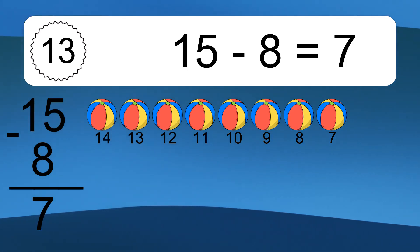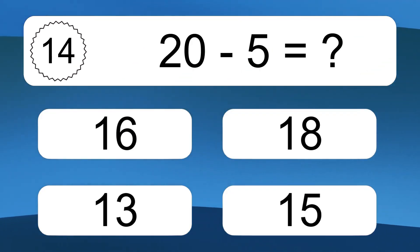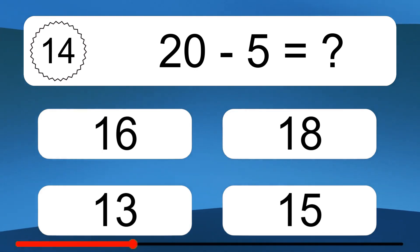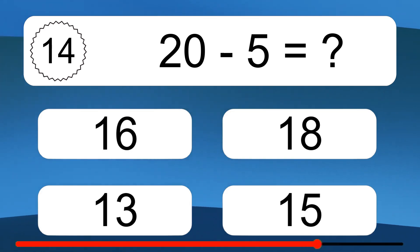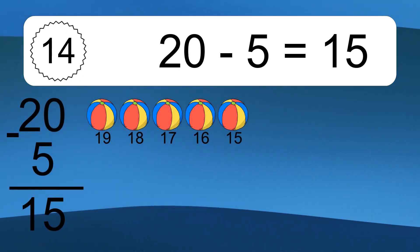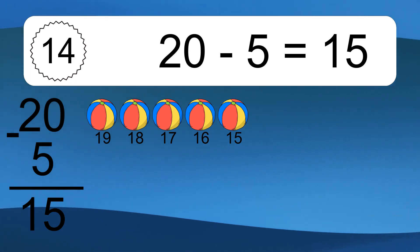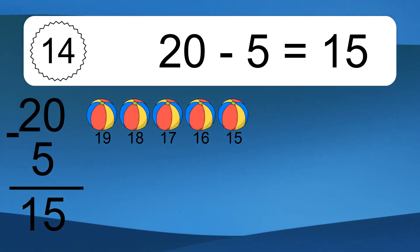20 minus 5 equals what? 20 minus 5 equals 15. Let's count it: 19, 18, 17, 16, 15.